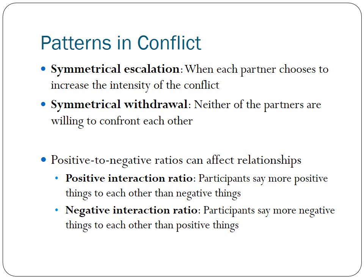Then you have symmetrical withdrawal, when neither of the partners is willing to confront each other — you say you don't want to get into a fight, so you go for a jog, and your partner says they'll go visit their mom. Then we have positive to negative ratios, which affect relationships significantly. A positive interaction ratio is when participants say more positive things to each other than negative — far better than a negative interaction ratio, where participants say more negative things. It is far better to avoid the negativity than to thrive on it.